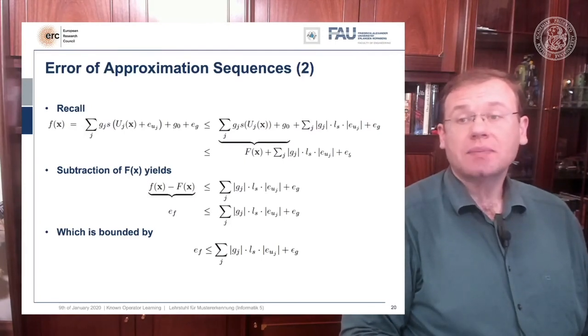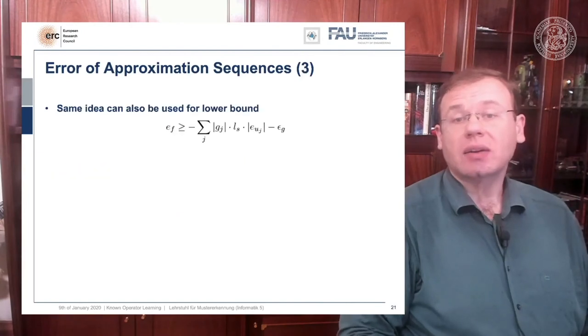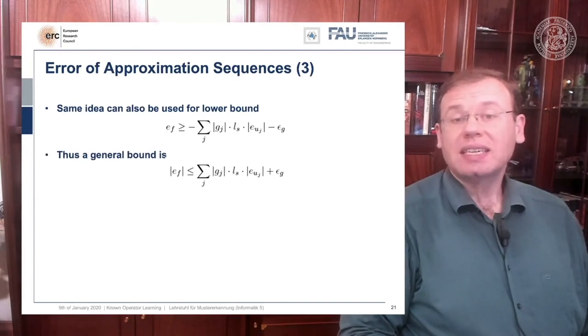Now these are all upper bounds, but the same idea can also be used to get a lower bound, and you see that then we have this negative sum and this is always a lower bound. Now if we have the upper and the lower bound, then we can see that the magnitude of ef is bound by the sum over the components gj times the Lipschitz constant times the error plus epsilon g.